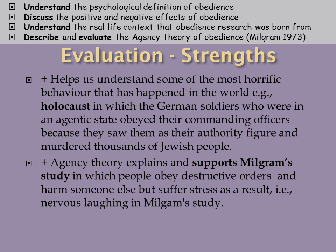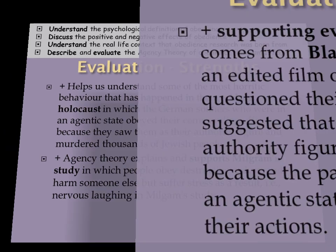Agency theory explains and supports Milgram's 1963 study and its variations, in which people do obey destructive orders and commit destructive obedience — they harm somebody else, but suffer stress as a result. In Milgram's study, many participants were nervously laughing and having fits because they couldn't cope with what was going on.